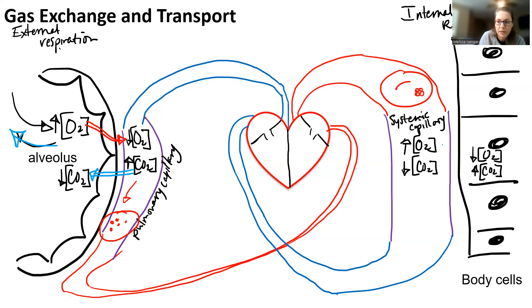What that means is carbon dioxide is going to move from high concentration to low concentration in the systemic capillary, whereas oxygen is high in the systemic capillary, so it gets moved to the low area, which is inside of the body cell.